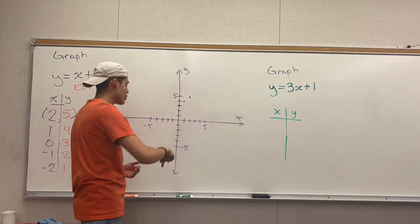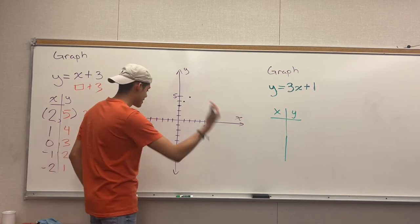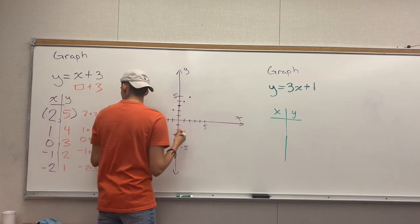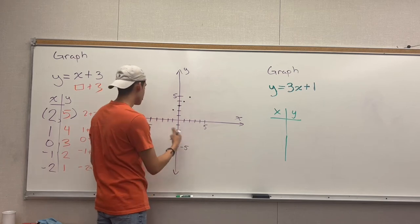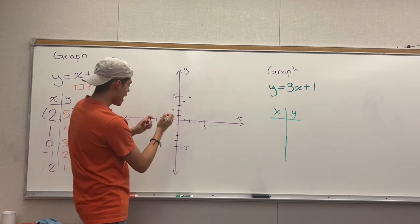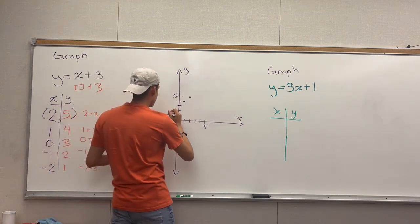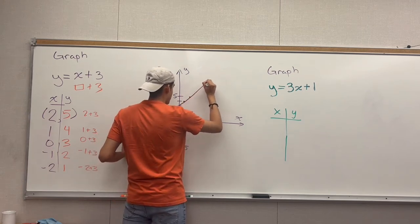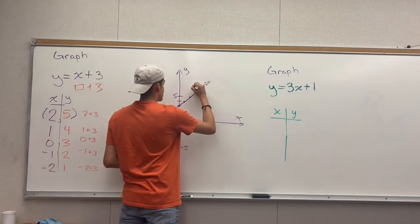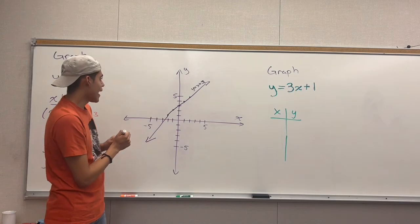The next point is negative 1, 2. Because x is negative 1, you go left 1 space and then up 2 spaces — your point ends up here. The last one is negative 2, 1: move left 2 spaces and then up 1. Now you have all your points, and as you can see they line up perfectly to form a straight line. Get a ruler and draw the line. You always name your line, so this line is named y equals x plus 3.